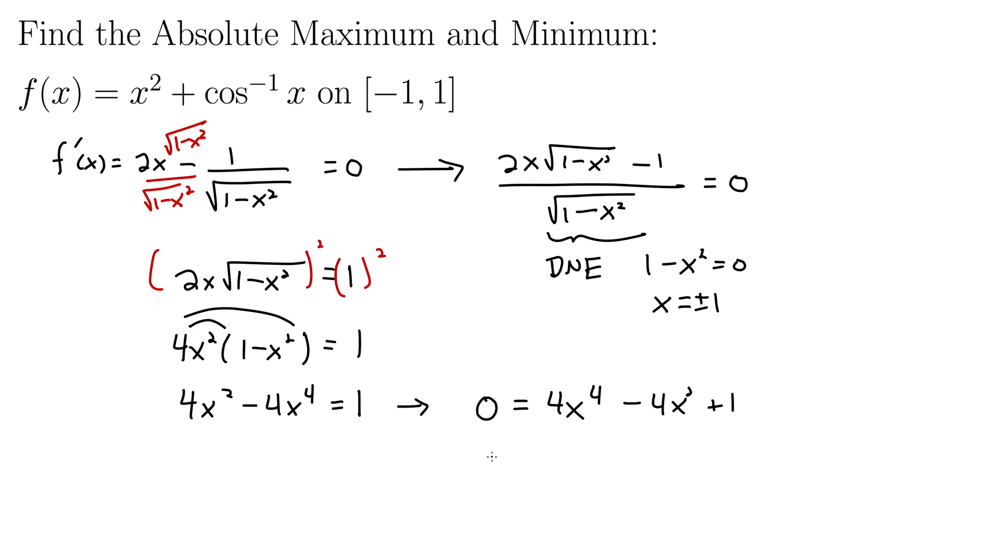I always like to keep my leading coefficient positive, so I'm going to move everything to the right. So this gives us zero equals 4x to the fourth minus 4x squared plus one. And note that this is a perfect square trinomial. So this factors nicely as something squared. How about 2x squared minus one quantity squared? And this is still equal zero.